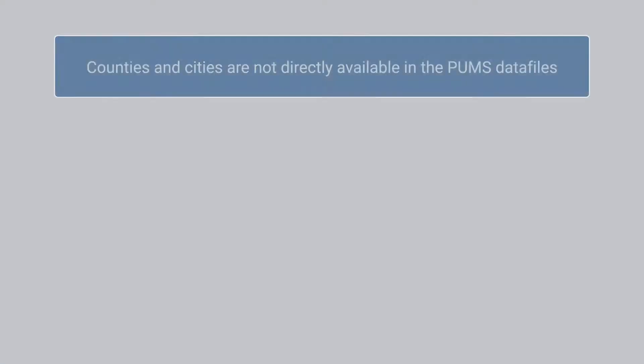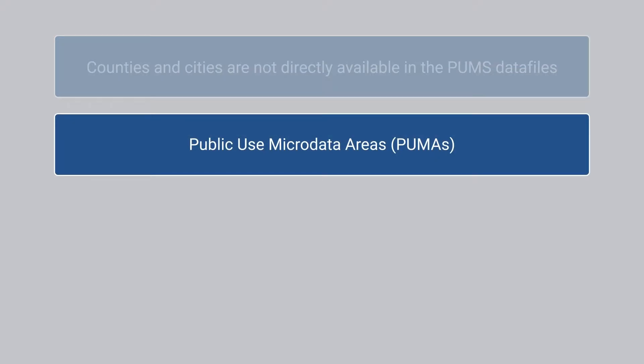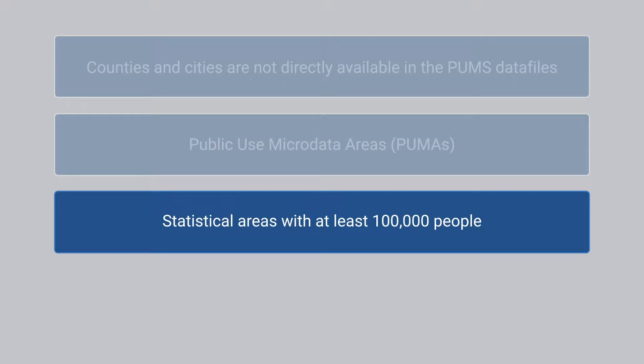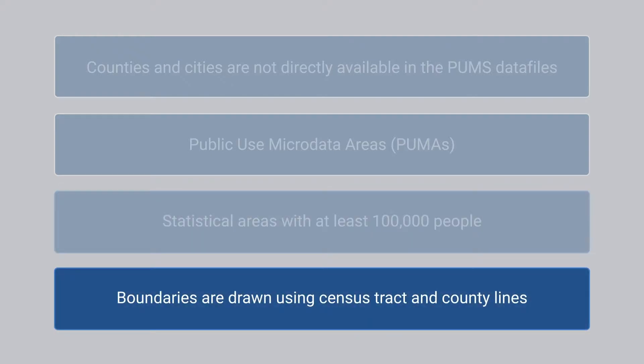Due to population thresholds, counties and cities are not directly available in the PUMS data files. Instead, the smallest geographic units available are Public Use Microdata Areas, or PUMAs. PUMAs are statistical geographical areas with at least 100,000 people. They are nested within states and are drawn using census tract and county lines. This means that many large counties and cities — those with at least 100,000 people — can be reconstructed using PUMAs.